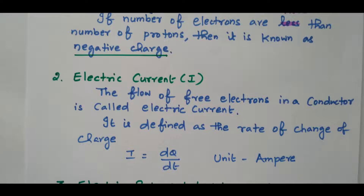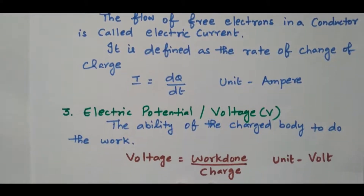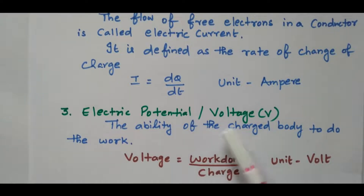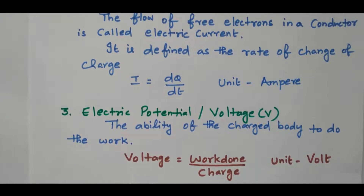Next we will see electric potential or voltage. The ability of the charged body to do work — how many electrons are moving — that is potential. Here the potential refers the ability of the charged body to do the work. That is nothing but work done by charge. Work done divided by charge gives the voltage. The unit is volt.